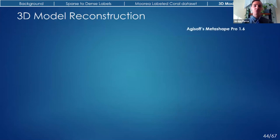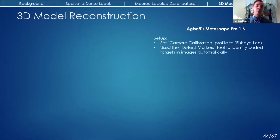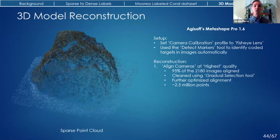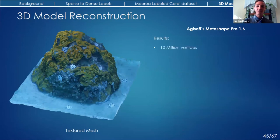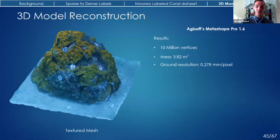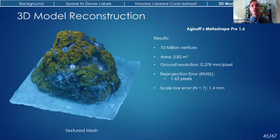These images were used with Agisoft Metashape Pro version 1.6 to create a 3D photogrammetric model following a methodology similar to Young et al. 2018. Because I used wide field of view mode with the GoPros, I set the camera calibration profile to fisheye lens. The images were aligned to create a sparse point cloud, and then using the depth maps created as a result, I made a dense point cloud. I then created a shaded mesh and then a textured mesh — consisting of about 10 million vertices covering an area of about four meters squared and 1.5 meters in height. The ground resolution was 0.278 millimeters per pixel and the reprojection error was about 1.62 pixels. I added scale to the model by providing real-world dimensions to some of the coded targets, giving an estimated accumulative error of about 1.4 millimeters.